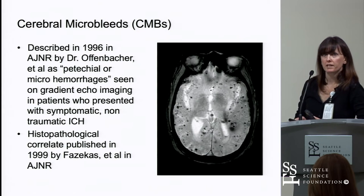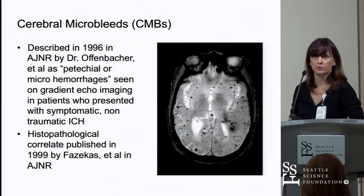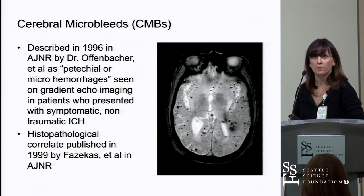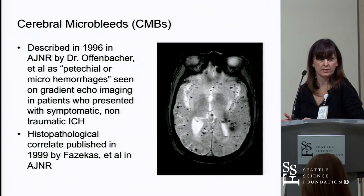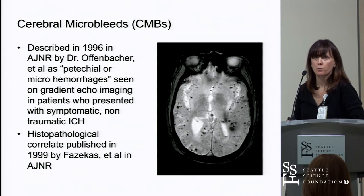Cerebral microbleeds were first described in 1996. The term was coined by Dr. Offenbacher, who termed these petechial or microhemorrhages. These are seen on gradient echo images in patients who had presented with symptomatic, non-traumatic intracranial hemorrhage. Within a few years, there were histopathological studies showing what the pathology looked like on postmortem studies.